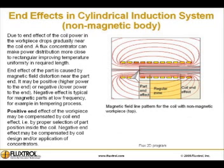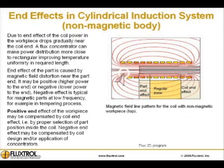The part end effect may be positive — higher power to the end — or negative — lower power to the end. The negative effect is typical for magnetic parts at low frequency, for example in a tempering process. The positive end effect of the workpiece may be compensated by the coil end effect, for example by proper selection of part position inside the coil. The negative end effect may be compensated by coil design and/or application of concentrators.